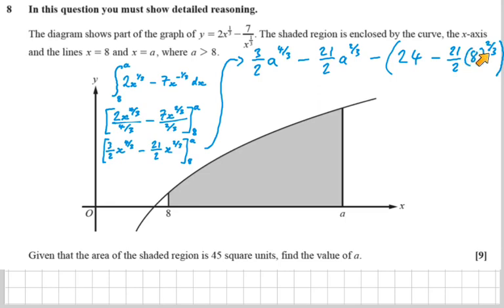Well, eight to the power of two thirds is four. And 21 over two times four is 42. Okay, I'm going to keep going actually in this space. 24 take away 42 is negative 18. And we're taking away negative 18, which is adding 18.